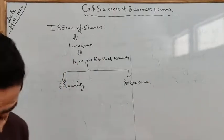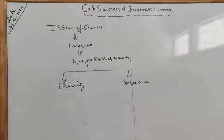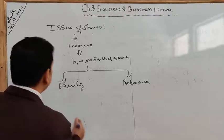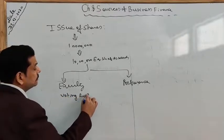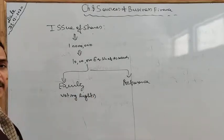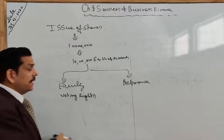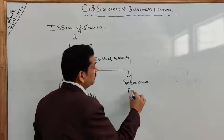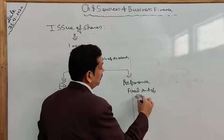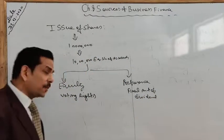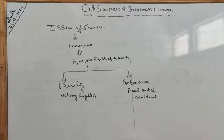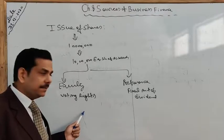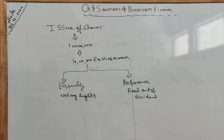The money raised by issue of equity shares is called equity share capital, while the money raised by issue of preference shares is called preferential capital. Equity shares are the most important source of raising funds. Equity shareholders possess voting rights and are actually the real owners of the company — everything is decided with their consent. Preference shareholders, on the other hand, get a fixed amount of dividend whether there is profit or not, and they do not possess voting rights.